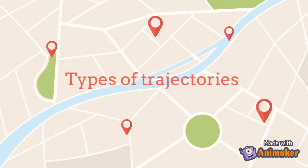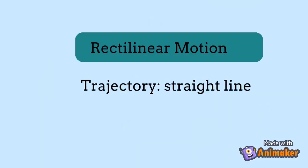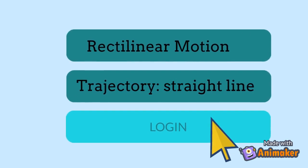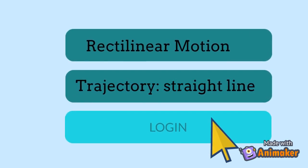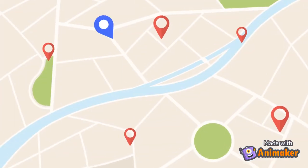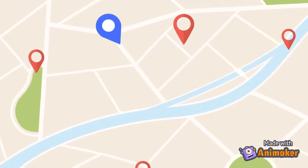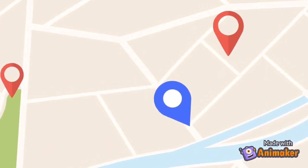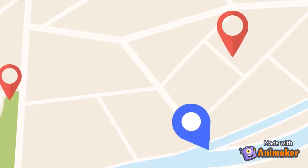We will consider simple types of trajectories. If the trajectory is a straight line, the motion is called rectilinear — that is, a motion along a straight path. The vehicle moves along a straight path; we say that it is in rectilinear motion.